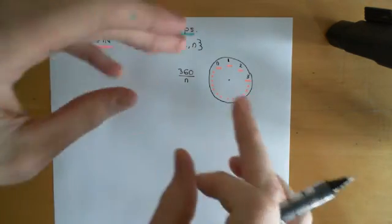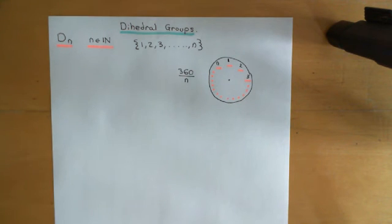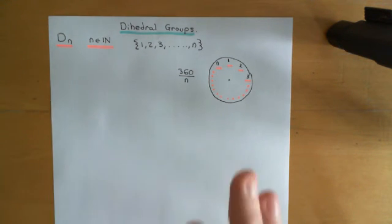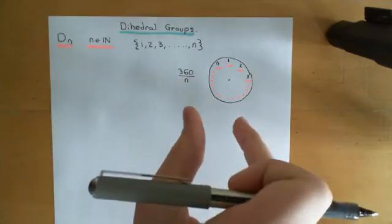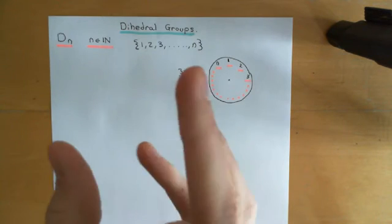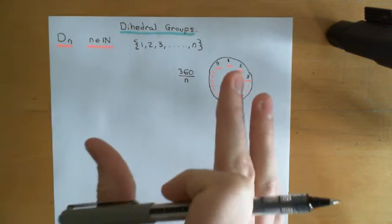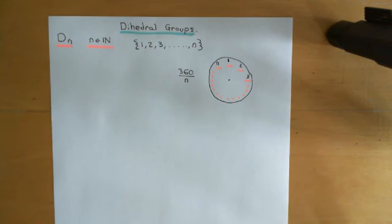These are the permutations you're allowed to build when creating a dihedral group on n elements — you're allowed not only to rotate in the two-dimensional plane, but also in the third dimension. You're allowed any maneuver that you can make in the real world in the three-dimensional world. So let's discuss why this actually forms a group.